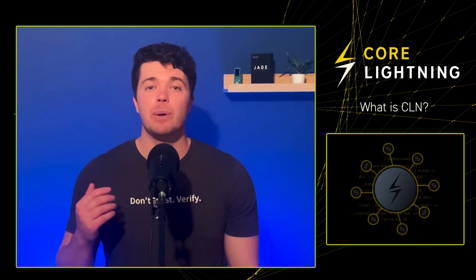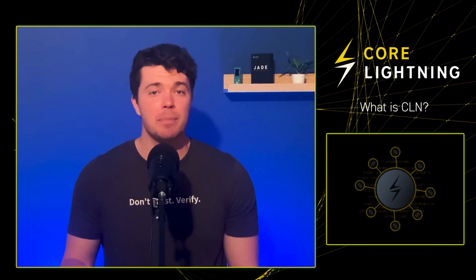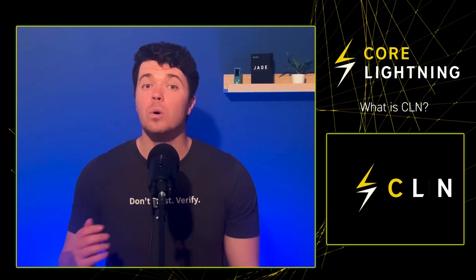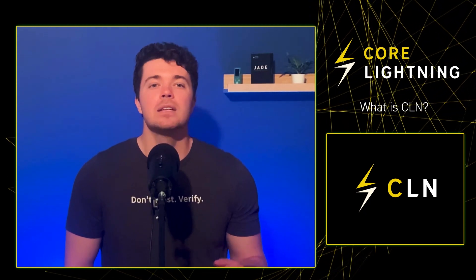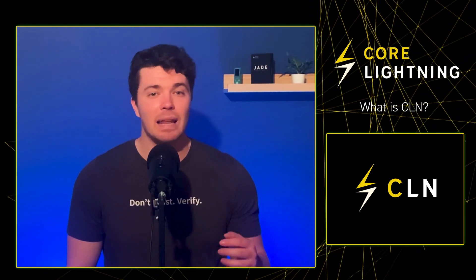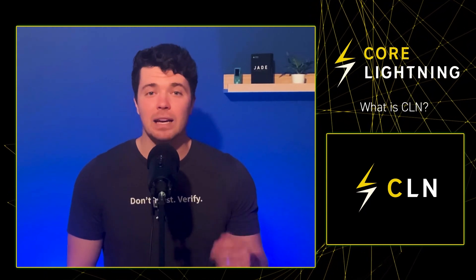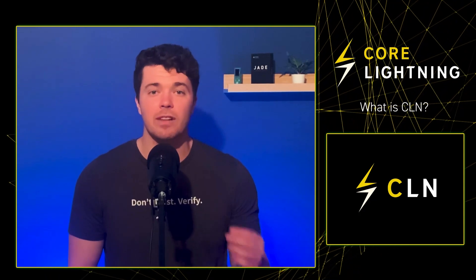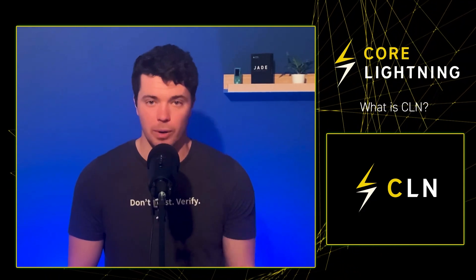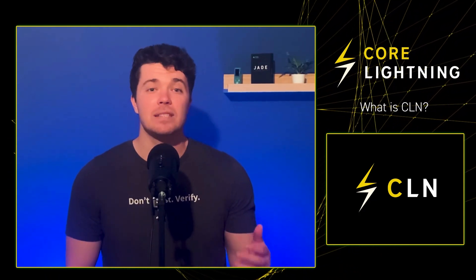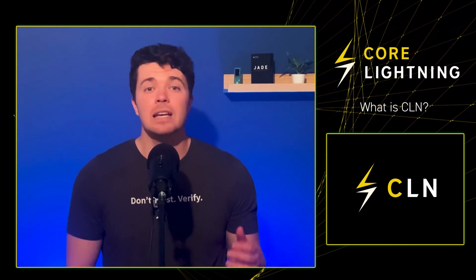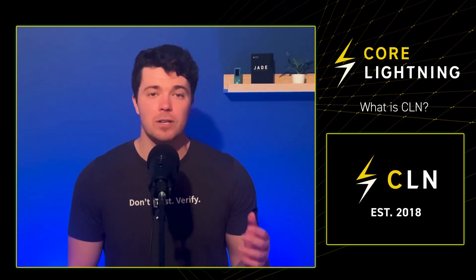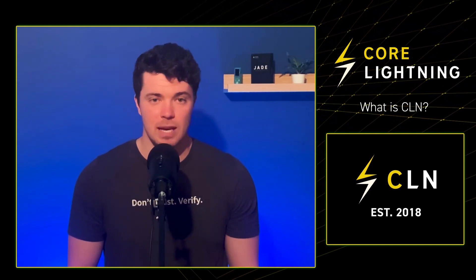It's time to delve deeper into a specific implementation called Core Lightning, or CLN for short. CLN is a lightweight, highly customizable, and Bolt-compliant implementation of the Lightning Network Protocol. Primarily written in C and Rust, CLN made its debut in 2018 as the first Lightning implementation.